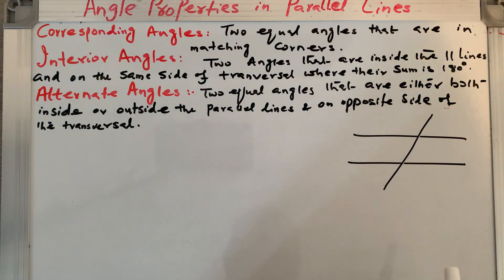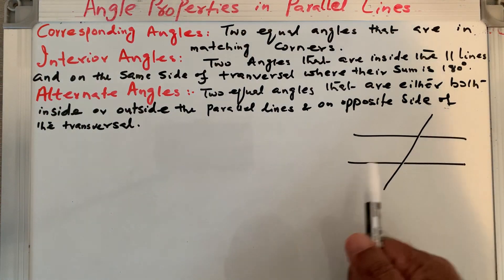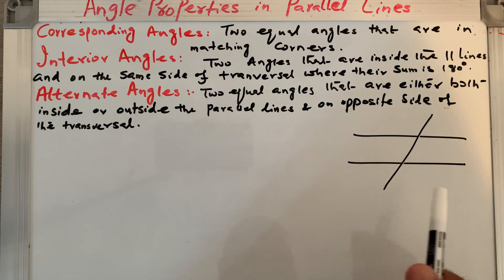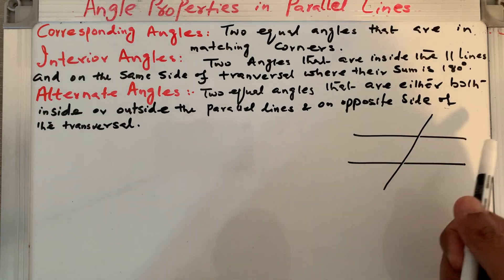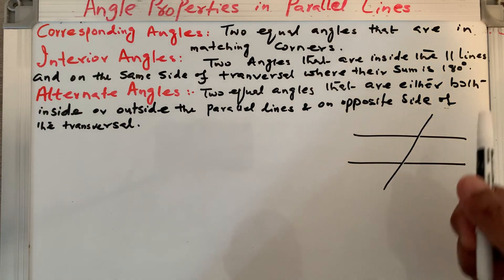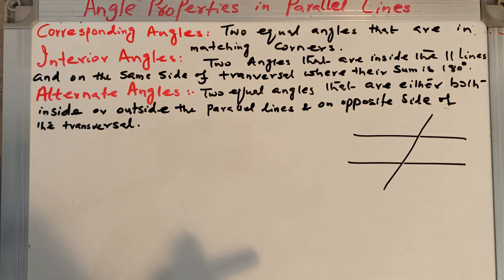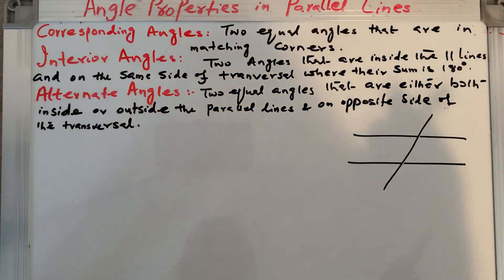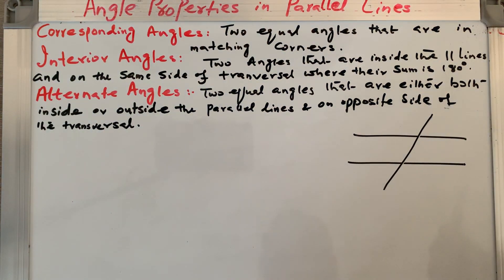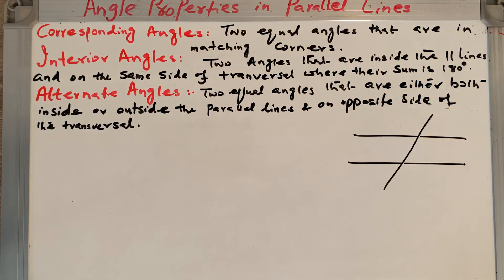So, what are those angles formed because of parallel lines and a transversal line? I draw two parallel lines and I have a transversal or transversal line. Now we see that there are angles formed, and we will learn about those angles today.